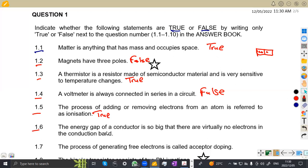On 1.6, the energy gap of a conductor is so big that there are virtually no electrons in the conduction band. Is this true, guys? That the energy gap is so big to that extent? No. This is false. There will be a little part that is the conduction band that is there, not to say that there will be no current electrons in the conduction band. That is false.